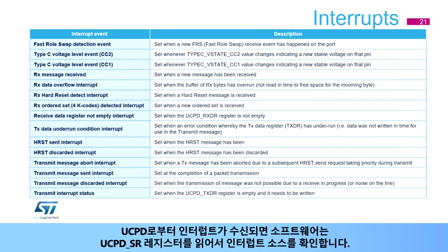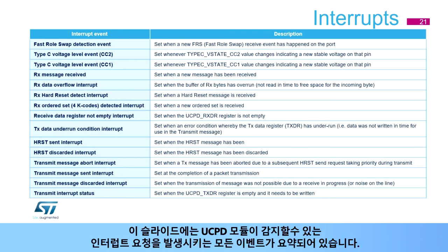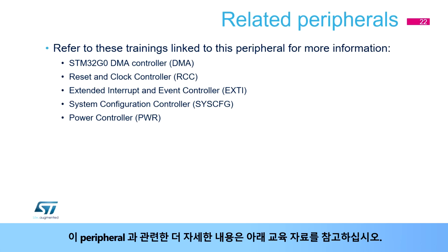When an interrupt from the UCPD is received, software must determine the source of the interrupt by reading the UCPD SR register. Depending on which bit is set to 1, the interrupt service routine should handle that condition and clear the bit by writing to the appropriate bit in the UCPD ICR register. This slide summarizes all the events detected by the UCPD module that can cause interrupt requests. Please refer to the training linked to this peripheral for more information.